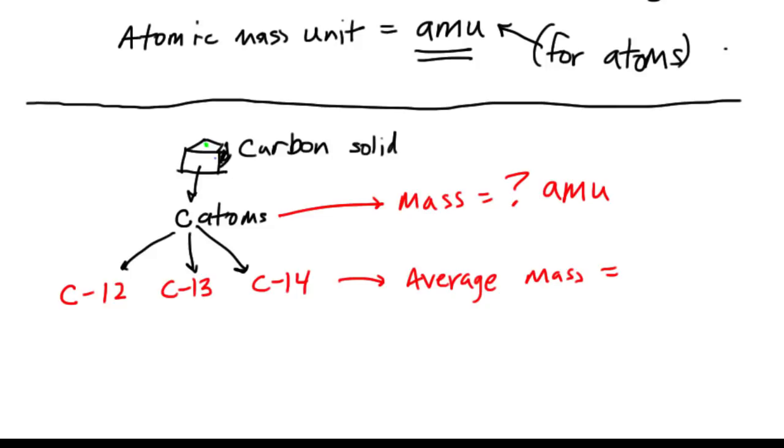Most of all of the carbon we deal with is going to be carbon-12. How do I know that? Because scientists have measured what's called the relative abundance.